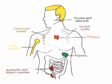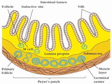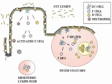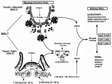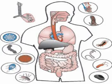Peyer's patches, which resemble tonsils, are found in the wall of the small intestine. The macrophages of Peyer's patches are in an ideal position to capture and destroy bacteria, which are always present in tremendous numbers in the intestine, thereby preventing them from penetrating the intestinal wall. Peyer's patches and the tonsils are part of the collection of small lymphoid tissues referred to as mucosa-associated lymphatic tissue, or MALT. Collectively, MALT acts as a sentinel, protecting the upper respiratory and digestive tracts from the never-ending attacks of foreign matter.